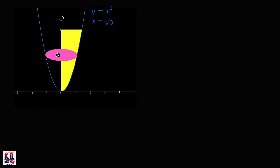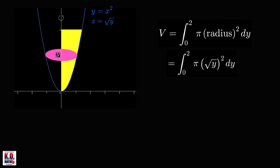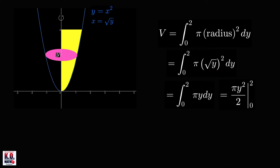Therefore, the volume of the solid equals the integral from 0 to 2 of pi times square root of y, quantity squared, dy, which simplifies to the integral of pi y dy. This equals pi y squared over 2, evaluated from 0 to 2. Plugging in y equals 2 gives 2 pi, and at y equals 0 we get 0. Therefore, the volume equals 2 pi, approximately 6.28.